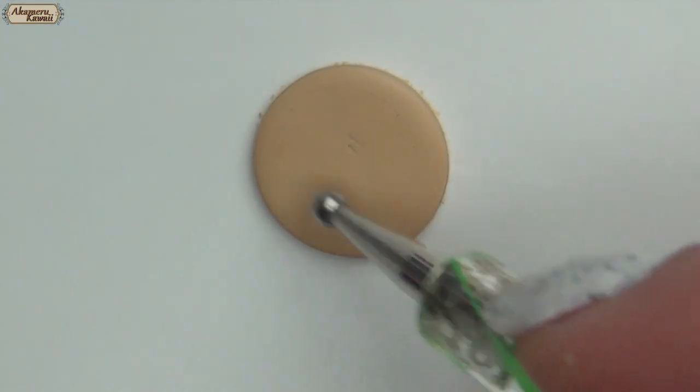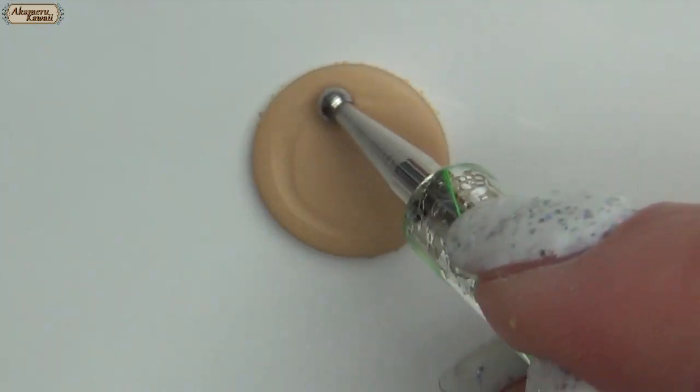For the cookies, roll out some light brown clay and cut a circle. Then I used a dotting tool to add shape.